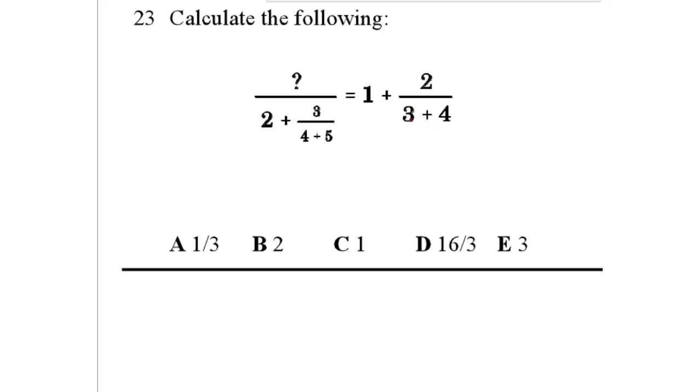Now, first of all we rewrite this without the pluses, we add the numbers first. So I can rewrite it as question mark over 2 plus 3 over 4 plus 5 is 9, so 3 over 9 equals 1 plus 2 over 3 plus 4 is 7.